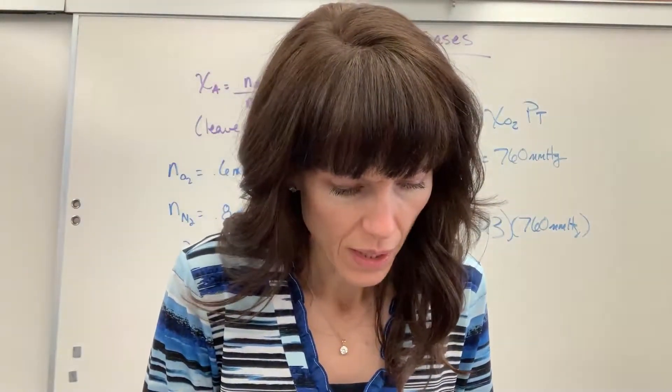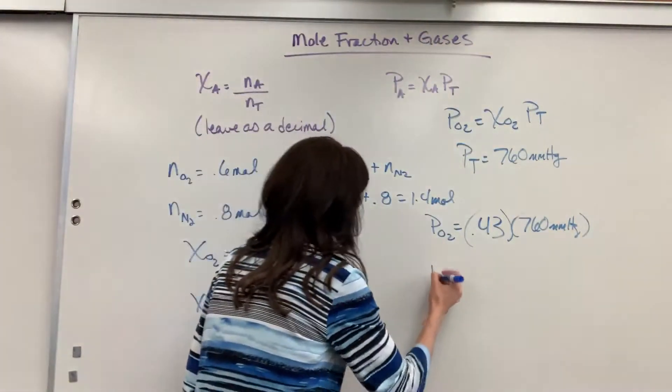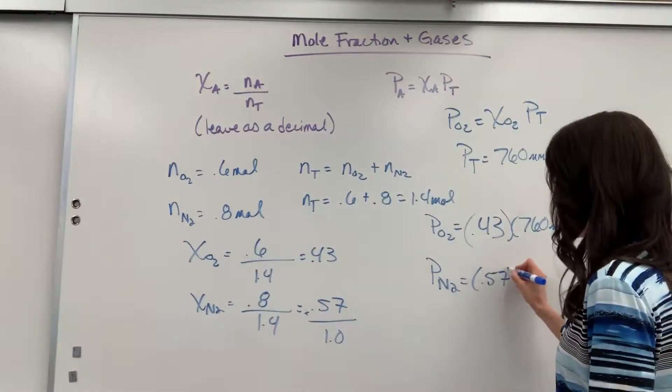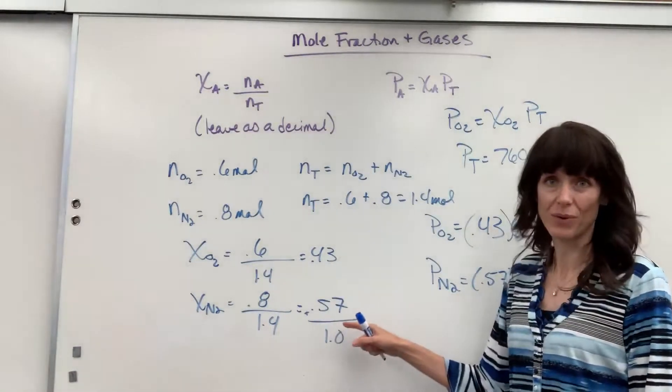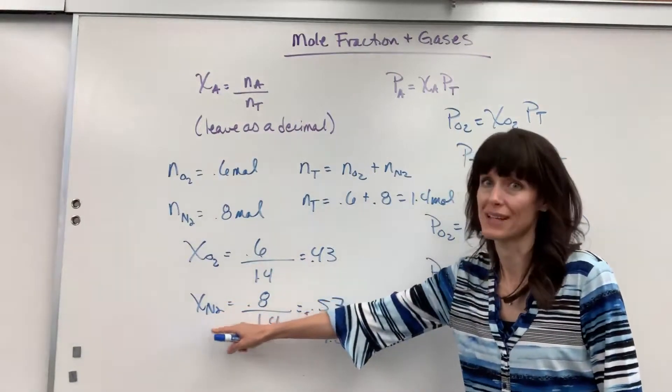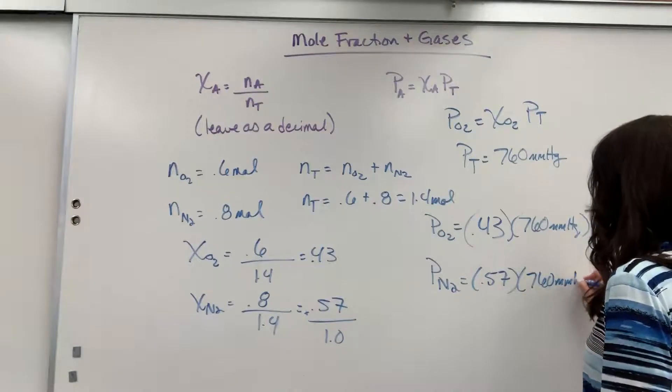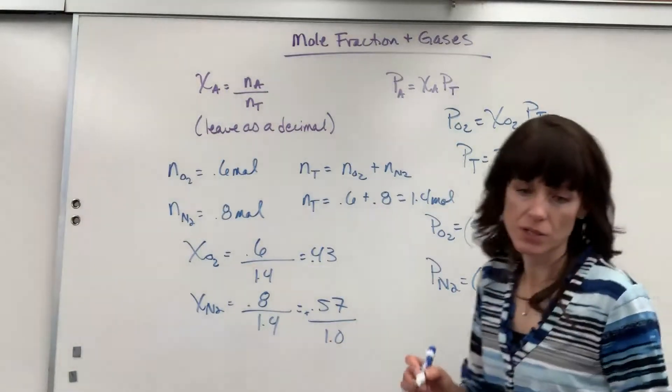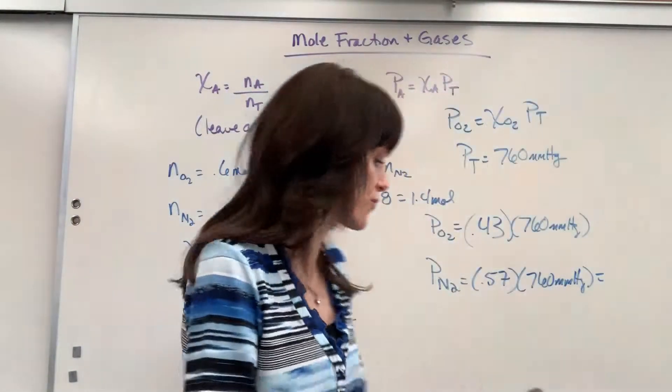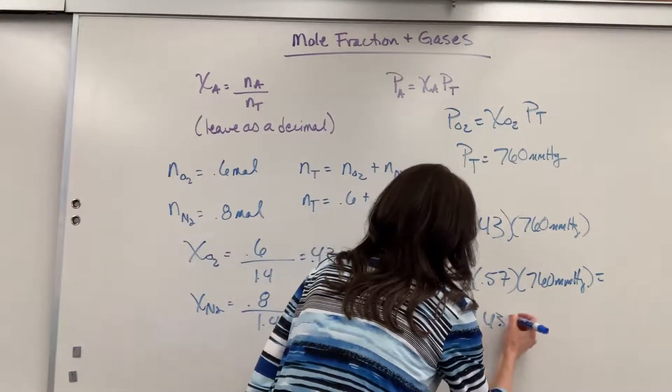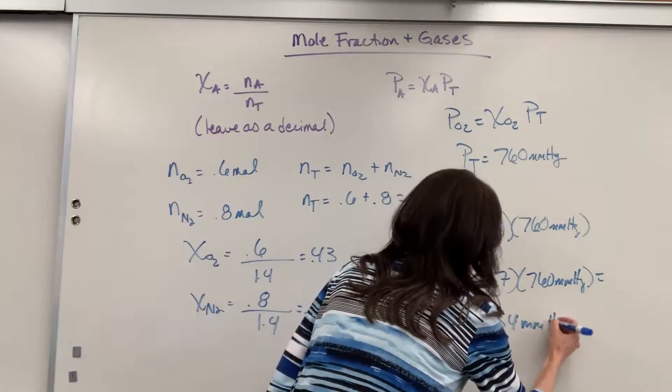Let's do another one. I want to take the nitrogen. We're going to have 0.57. 57% of all the moles come from nitrogen. Simply multiply that by the total, and the partial pressure for the nitrogen is 434 millimeters of mercury.